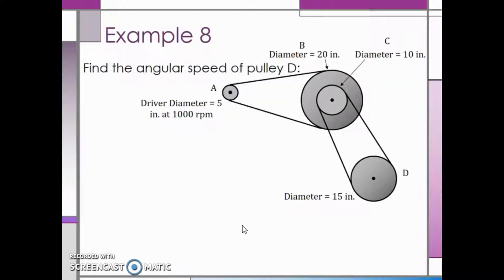Let's take a look at one last example. We want to find the angular speed of pulley D, which has a diameter of 15 inches.